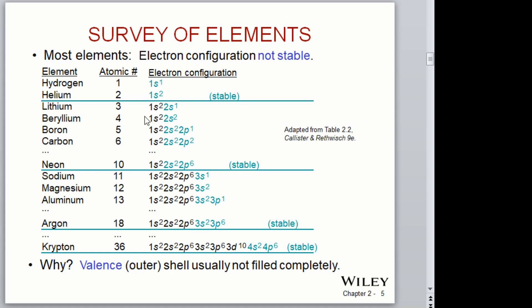What is the atomic number? It's listed in the second column here and is simply the number of protons — it's also the number of neutrons and the number of electrons. So we have one electron for hydrogen, one neutron, and one proton, and you go higher as you go down the periodic table.